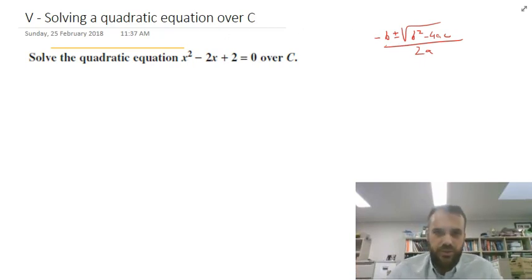But because we've got imaginary numbers now, or complex numbers now, we can deal with those negatives under the square root sign. So that's the key difference here when we're solving a quadratic equation over C.